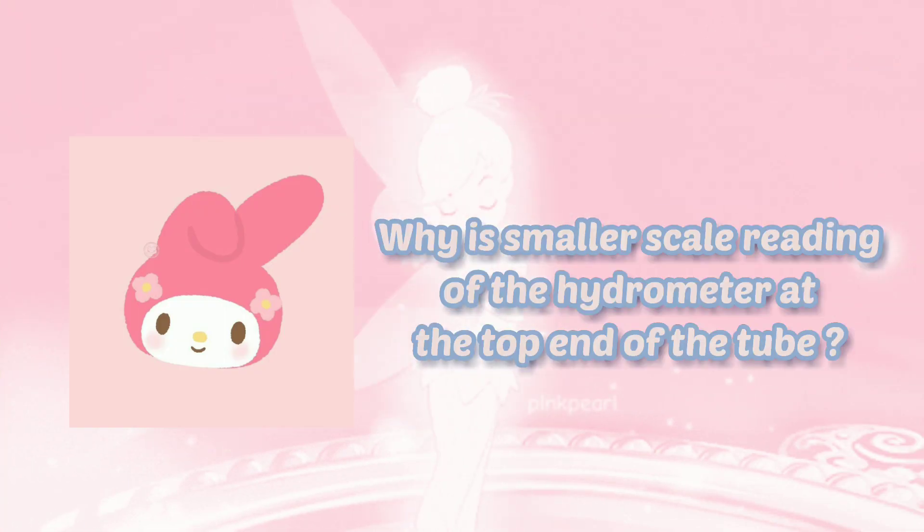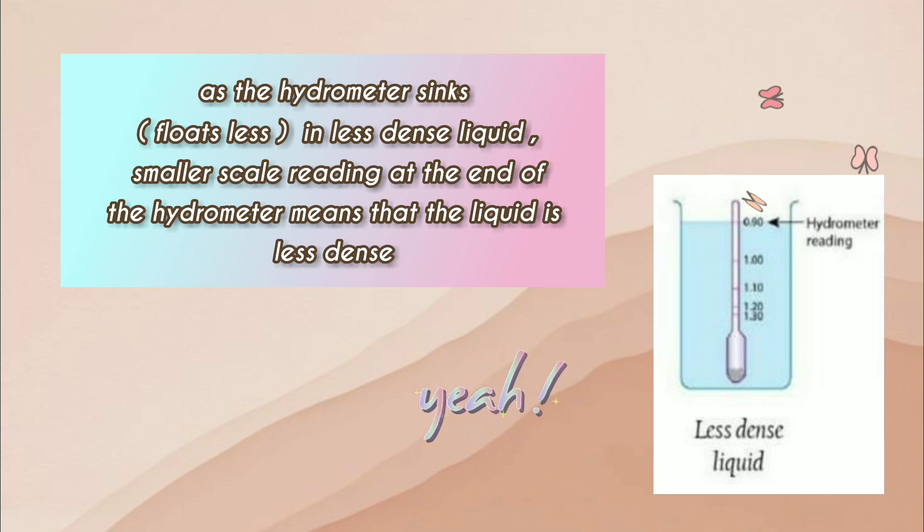Why is the smaller scale reading of the hydrometer at the top end of the tube? As the hydrometer sinks, floats less in less dense liquid, smaller scale reading at the end of the hydrometer means that the liquid is less dense.